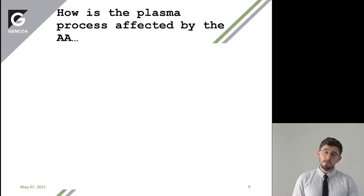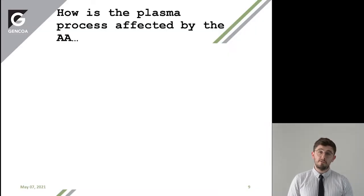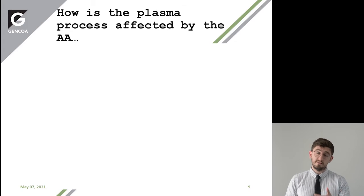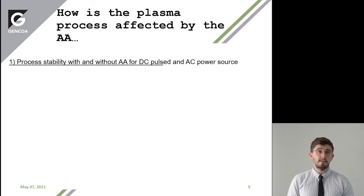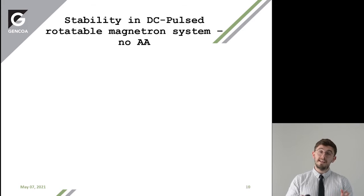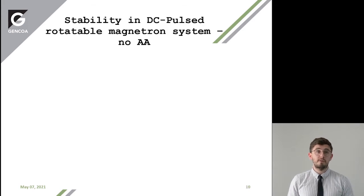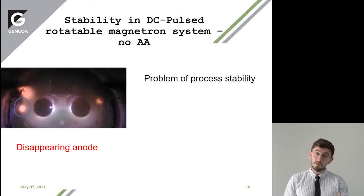So that was a good visualization of what actually happens to the plasma — but how is the process affected by the active anode? This is process stability with AC and DC pulsed systems. This is the stability in the DC pulsed rotatable magnetron system without an active anode.